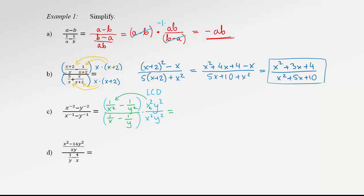Let's carry on. Multiplying the first fraction by x squared y squared — x squared reduces with x squared — leaving us with y squared. Then minus, and multiplying LCD by the second fraction: y squared reduces with y squared, leaving us with x squared. Everything over: LCD times 1 over x reduces just one x, so we get xy squared. Then minus, LCD times the second fraction reduces one y, leaving x squared y. So the denominator is xy squared minus x squared y.